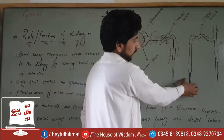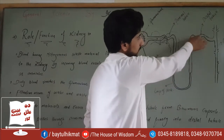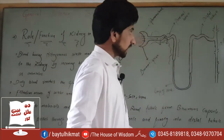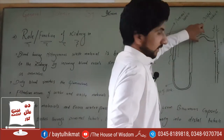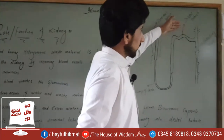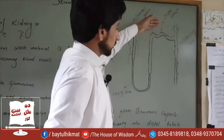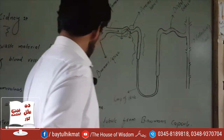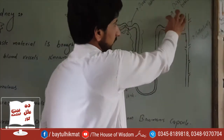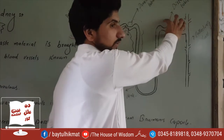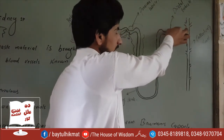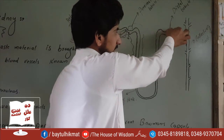The waste material then reaches the distal convoluted tubule. This is a reabsorption stage. There is no water or useful material left to reabsorb further. This is the distal convoluted tubule — reabsorption stage. The remaining filtrate or waste material passes on. This is blood.